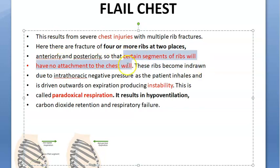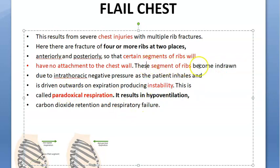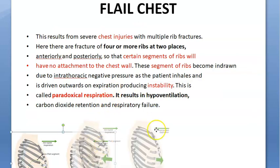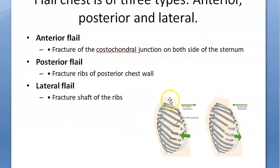These segments have no attachment to the chest wall, causing instability while breathing. When the patient inhales, the rib pieces are drawn inward while the whole chest wall moves forward. When breathing out, the chest goes back and these pieces are driven outward. This paradoxical respiration produces hypoventilation, carbon dioxide retention, and respiratory failure.